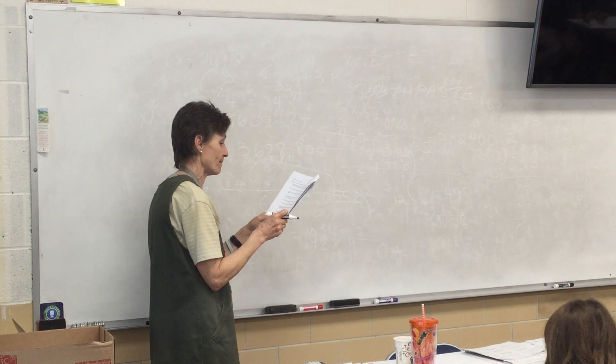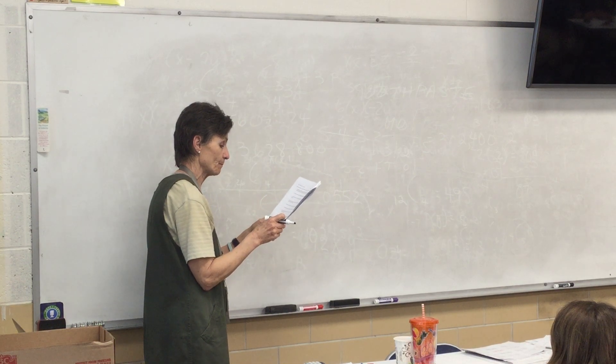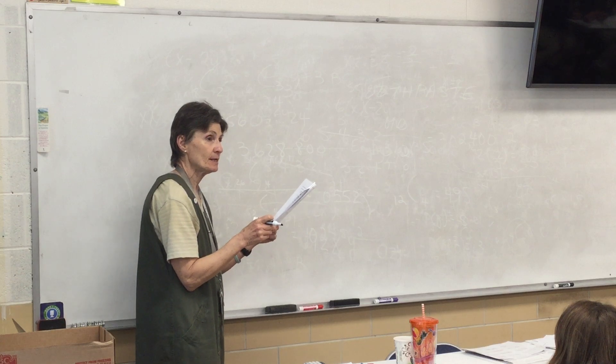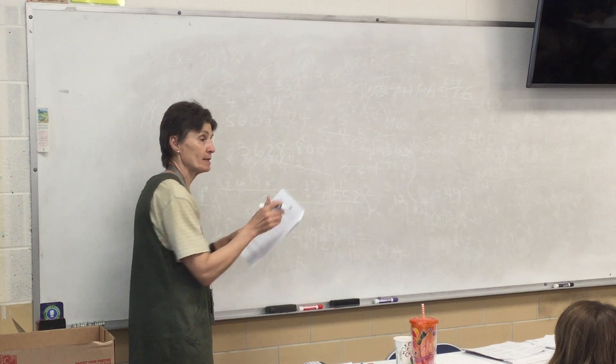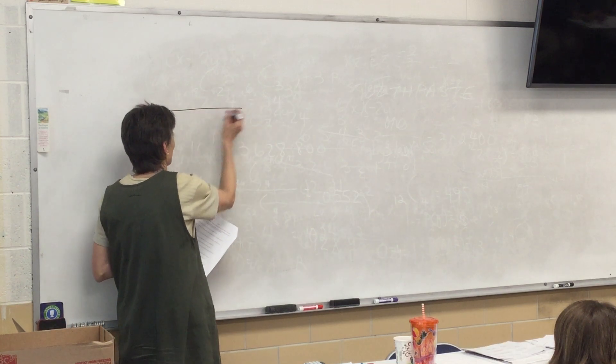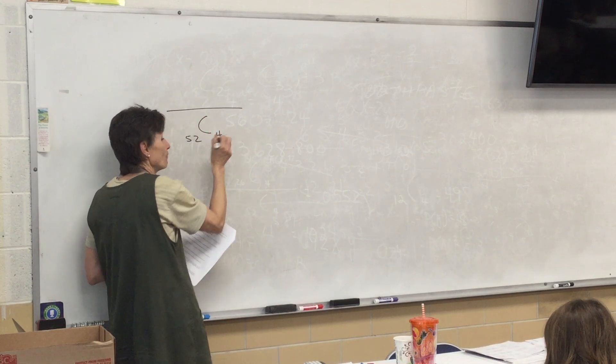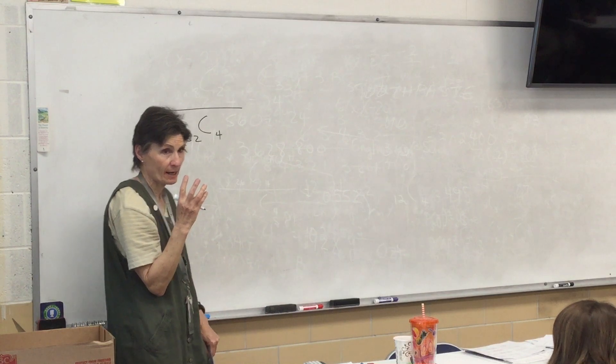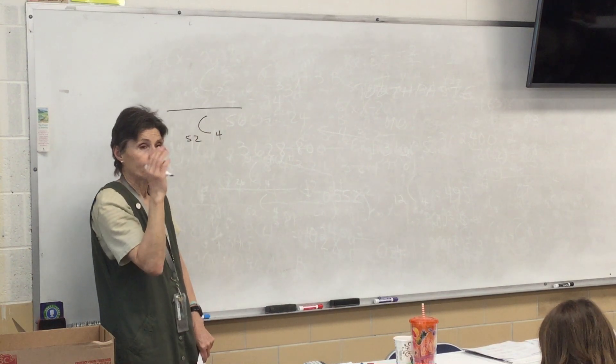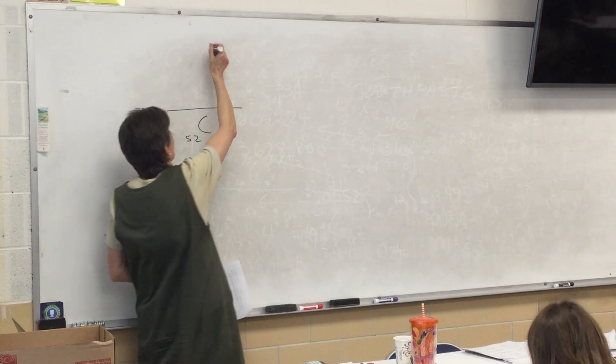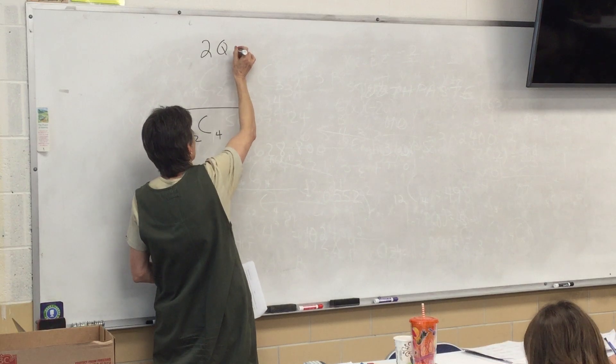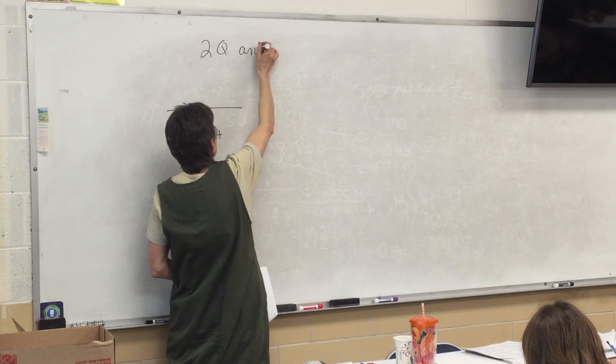Alright, what is the probability of being dealt a 4 card hand that has exactly 2 Queens? Okay, what do I know about my denominator? 52C4, it's a 4 card hand. Now, 4 cards, 2 have to be Queens, and what about the other 2?